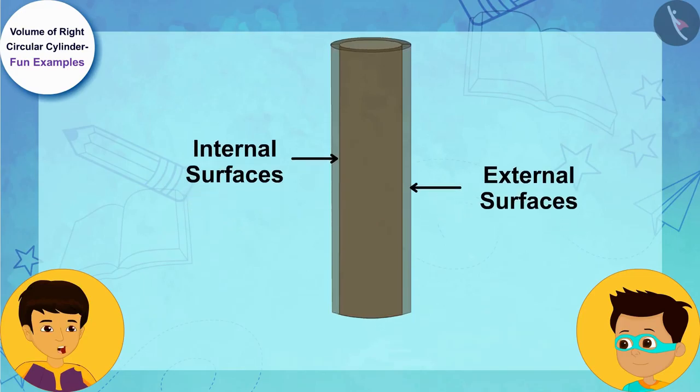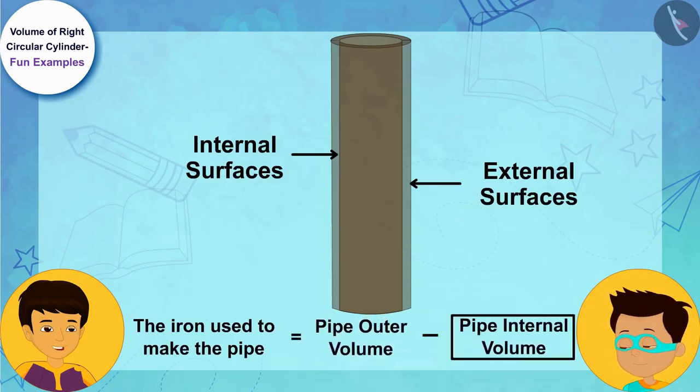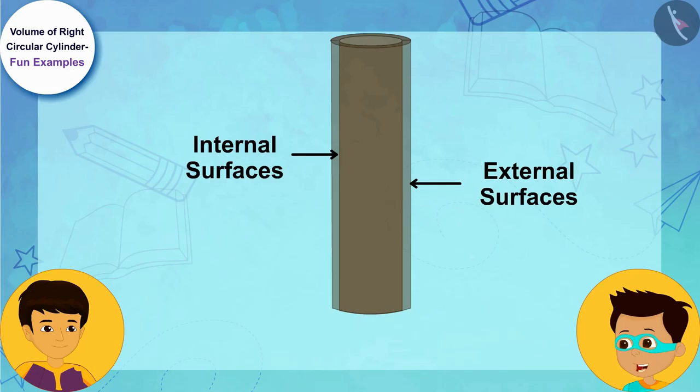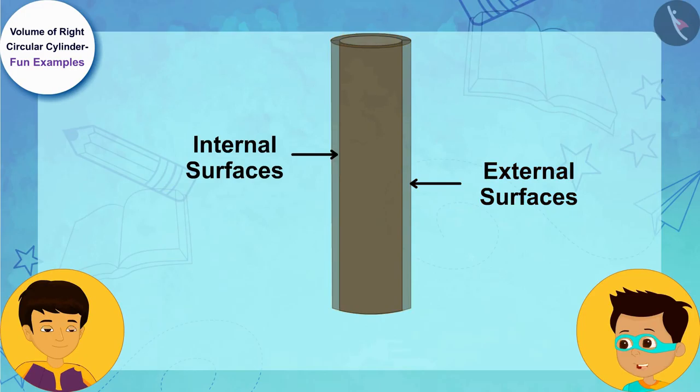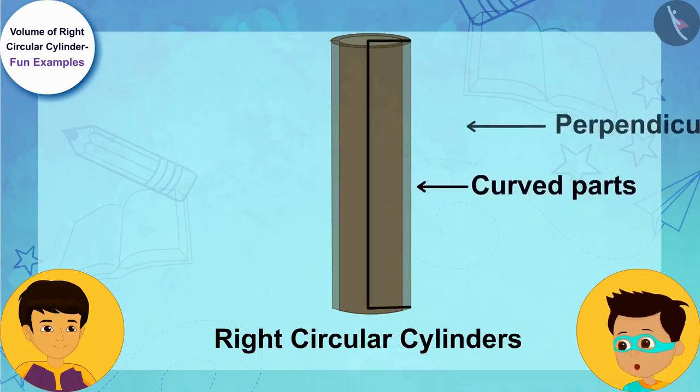Therefore, we can find the iron used to make the pipe by subtracting its internal volume from its outer volume. Yes, Manas. And see, both the inner and outer surfaces of the pipe are right circular cylinders, because their curved paths are perpendicular to their circular base.